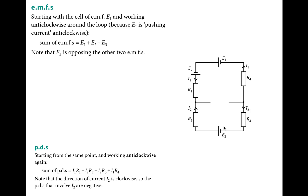There are three power sources: E1, E2, and E3. With anti-clockwise as positive, the current from E1 is positive and from E2 is also positive. However, E3 opposes the direction of E1 and E2, so E3 is negative. Therefore, the sum of EMFs is E1 plus E2 minus E3.